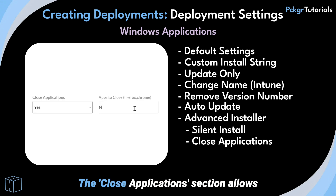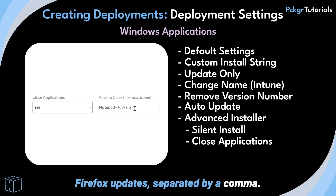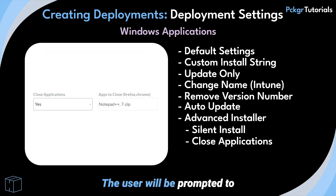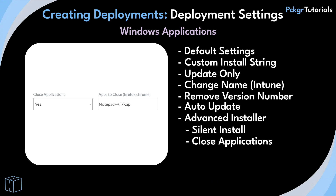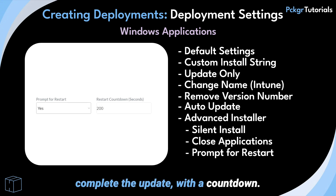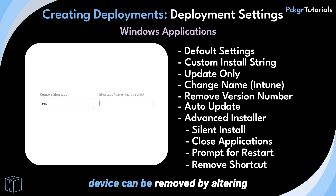The Close Applications section allows a list of applications to be closed when Firefox updates, separated by a comma. The correct name for the application can be found in Task Manager under Processes. The user will be prompted to close these apps if they are in use when the update is to occur. The Prompt for Restart option will ask the user to restart their device to complete the update with a countdown.